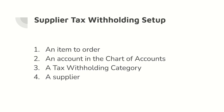Now I'm going to minimize this slideshow and take you through the setup process. It's straightforward. We need to set up an item that we can order, then go to the chart of accounts and create an account for withholding tax, then create a withholding tax category, and finally create a supplier. I'll mention any critical information as we go.